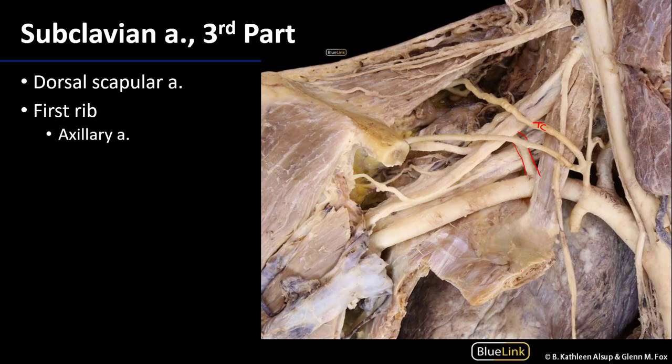Beyond the lateral margin of the first rib, the third part of the subclavian artery transitions into the axillary artery, which runs through the axilla — colloquially the armpit — and will be important for naming parts of the brachial plexus, as we'll discuss later. So we've covered the major vessels coming off the arch of the aorta and specifically the parts of the subclavian artery and their branches. Thank you very much for your time.